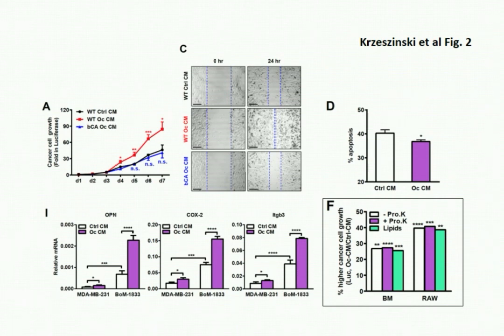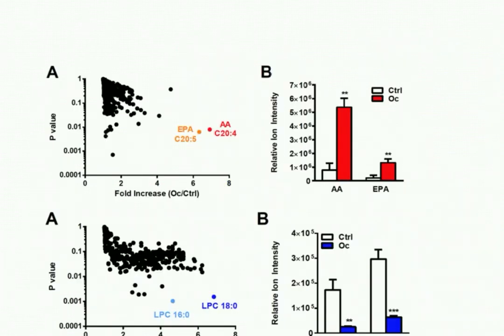The next question was: what are the effective components in the conditioned medium? By using Protease-K treatment, we identified that the non-protein portion of the conditioned medium is functionally important. Then we performed metabolomics profiling using untargeted liquid chromatography mass spectrometry analysis to pinpoint the most significantly altered lipids. They are eicosanoid acid and lysophosphatidylcholines, or LPCs in short. Eicosanoid acid was increased by more than six-folds while LPCs were decreased by four- to seven-folds in osteoclast lipids compared to control lipids.